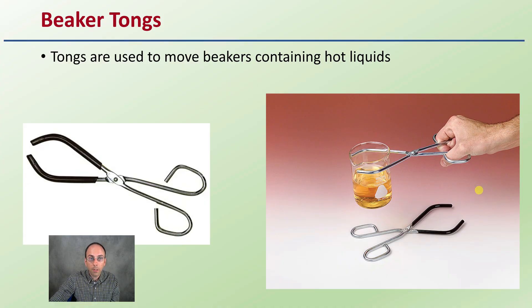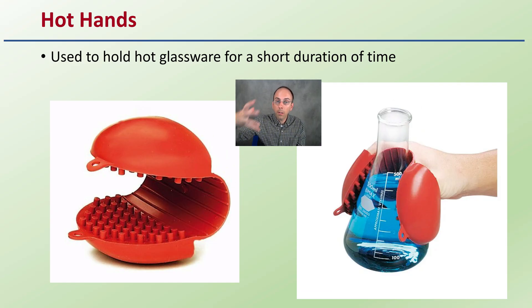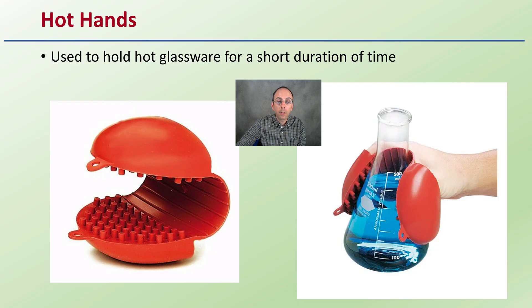Beaker tongs pick up beakers — no surprise there. Typically used when the beaker is very hot. They tend to be rubber-coated to reduce slippage. In addition to beaker tongs, hot hands is another option: slip your hands in and you're able to hold hot glassware for a short duration. They tend to be a little easier than the beaker tongs and the rubber grips hold quite well, again for short distances.